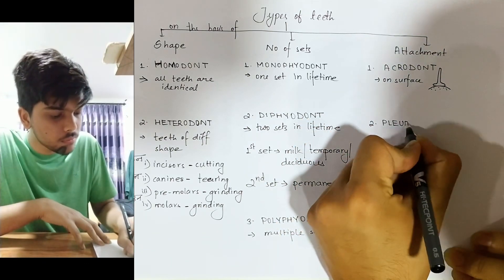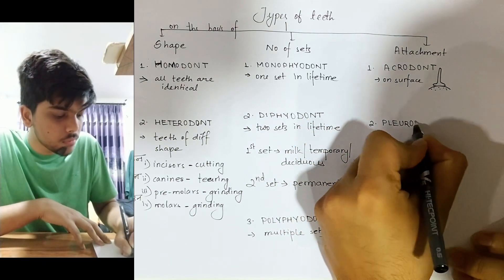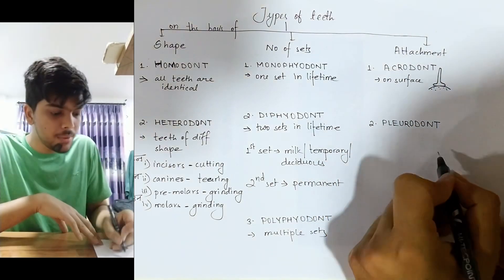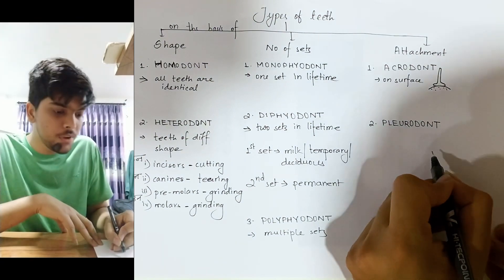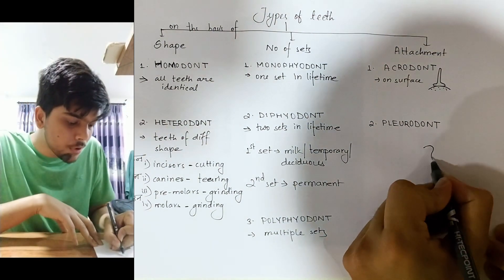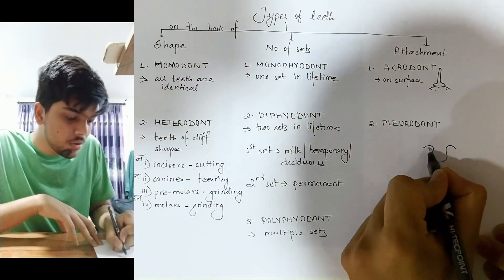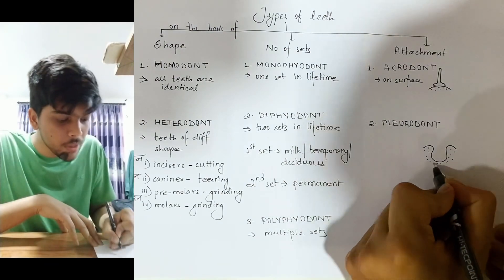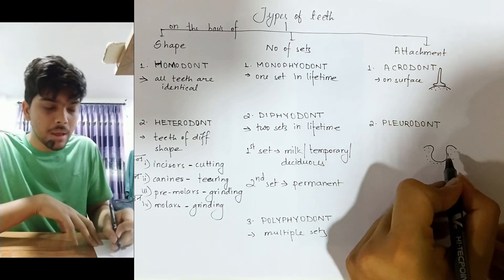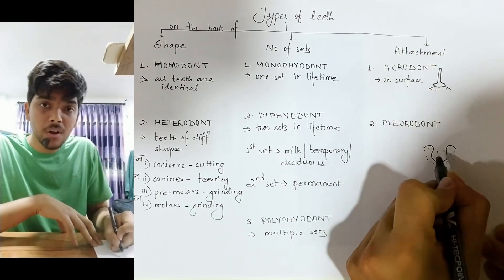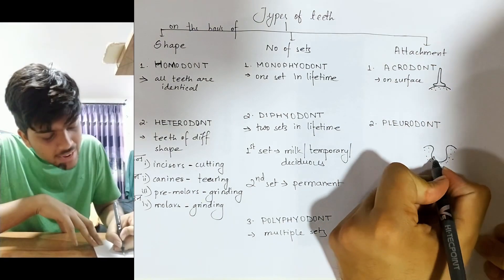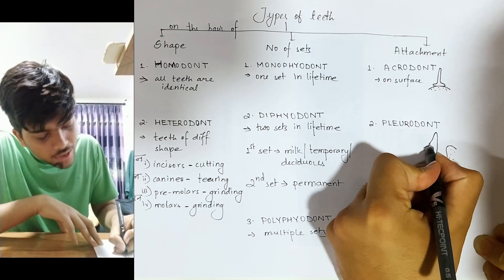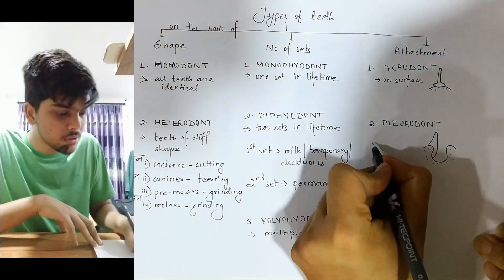Number two: Pleurodont. In pleurodont, there is an alveolar ridge present, and the tooth is connected or attached on one side of that alveolar ridge.